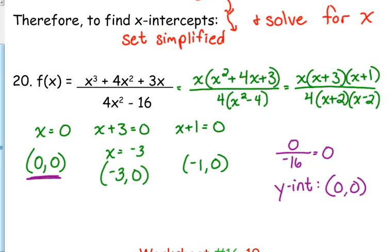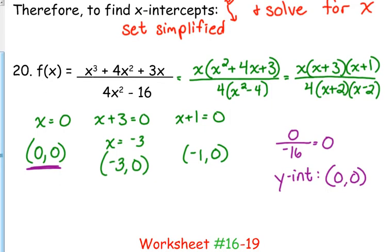The only thing is, if you have a vertical asymptote or a hole at x equals 0, you can't have a y-intercept, because you can't touch x equals 0.